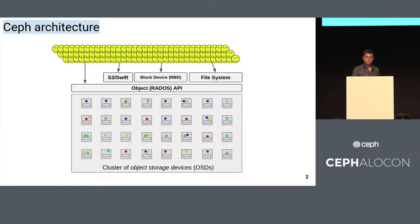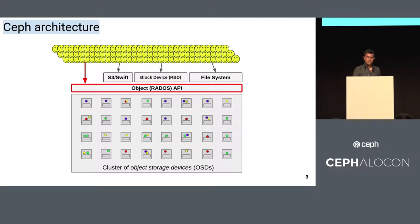So this is a picture of the Ceph architecture. I'm going to use this picture throughout the talk, so it's worth two seconds describing it. There are clients accessing the cluster below through a variety of APIs, like RADOS or RBD. This talk is primarily going to focus on access to the system through the lower-level RADOS API.